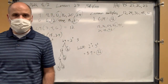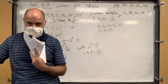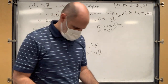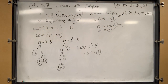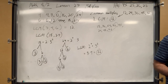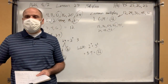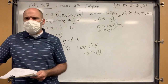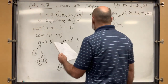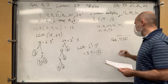If 16 popsicles cost four bucks, how much does one popsicle cost? 25 cents. How'd you do that so fast? 4 times 4 is 16, so you divide 4 by 4 — 400 by 4. So it's a division problem: you want to know how much each popsicle costs. You go 400 cents divided by 16, or $4 divided by 16. They need to be in the same unit — same family.